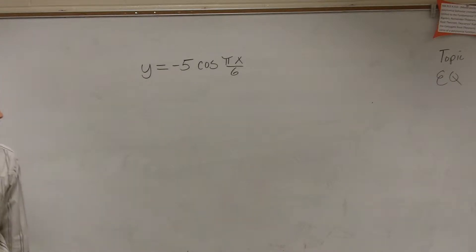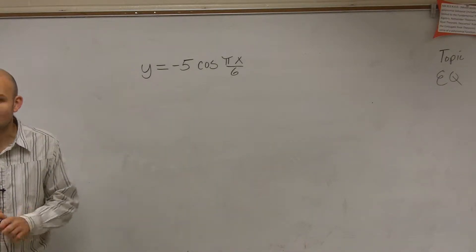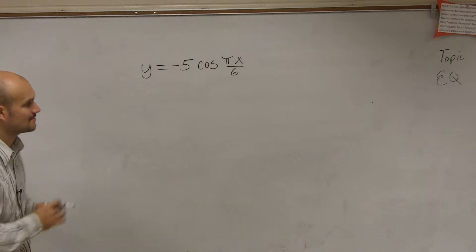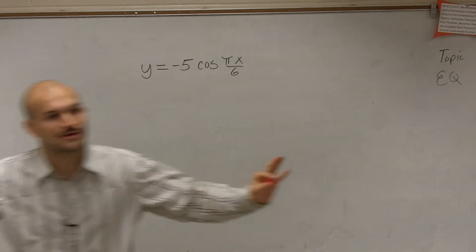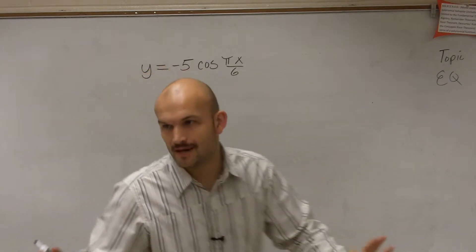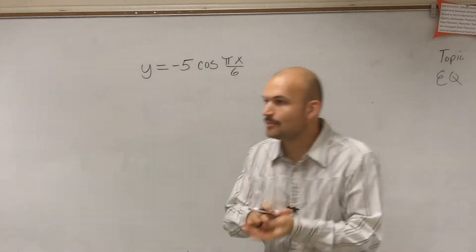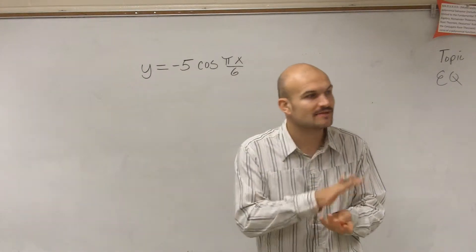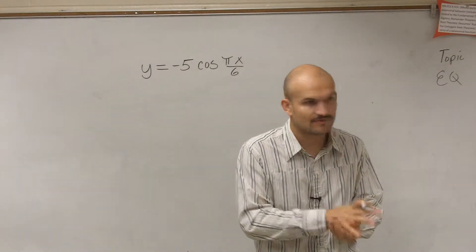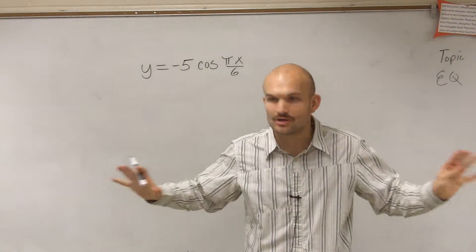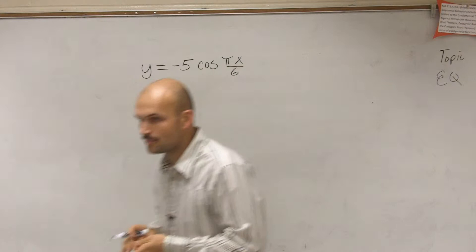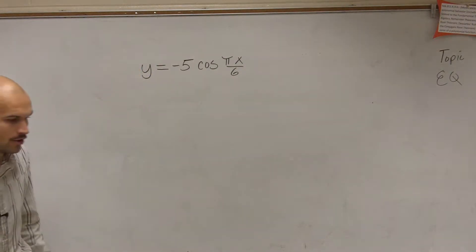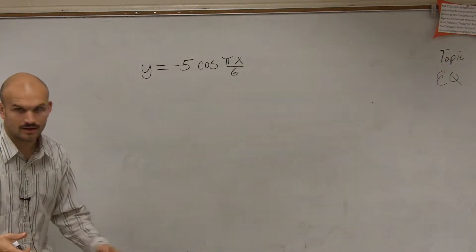So we have y equals negative 5 cosine of pi x divided by 6. The first thing I want you guys to do — don't even worry about graphing right now. There are a couple important things we need to figure out before you even start to graph. Let's figure out the important parts, and these are ones that I've talked about over and over.